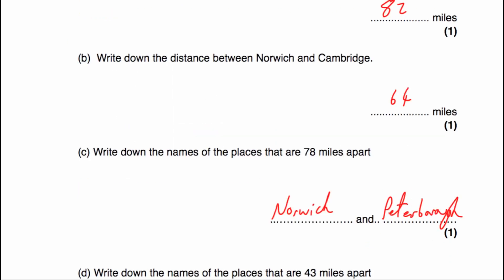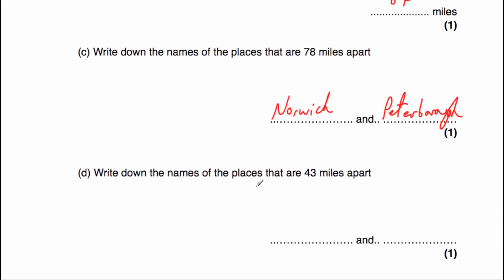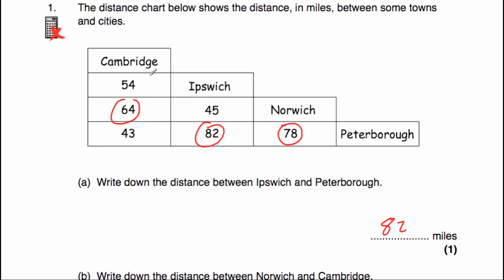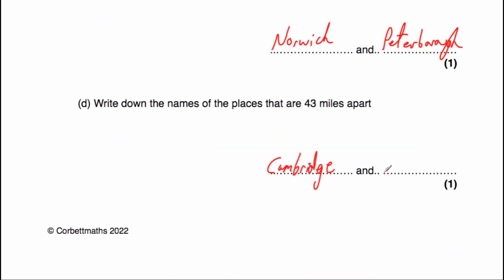Part D says write down the names of the places that are 43 miles apart. If we go back up to our distance chart and look for 43 miles, that's here, and that's Cambridge and Peterborough. So Cambridge and Peterborough are 43 miles apart. Okay, that's question number one.